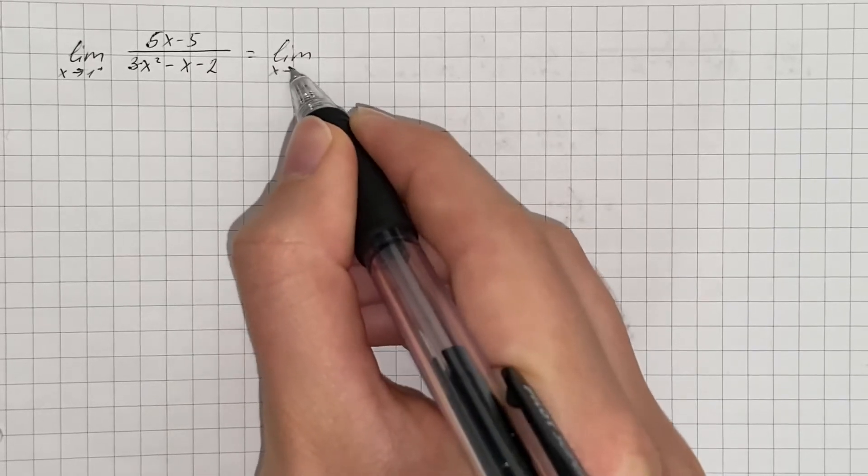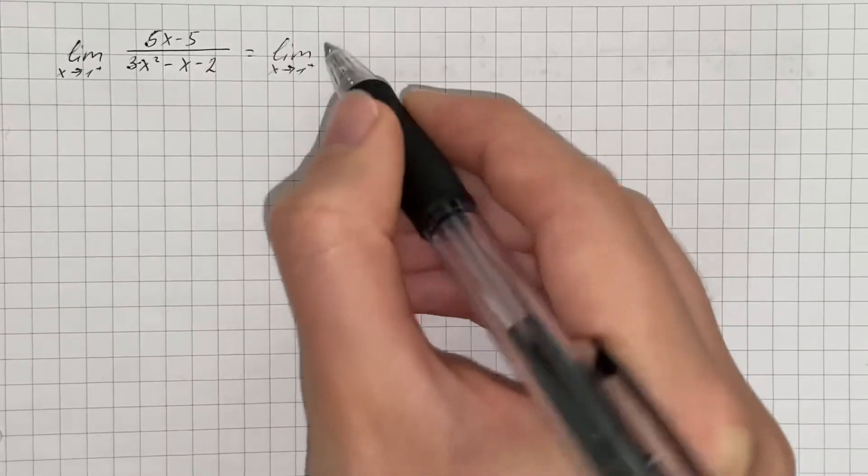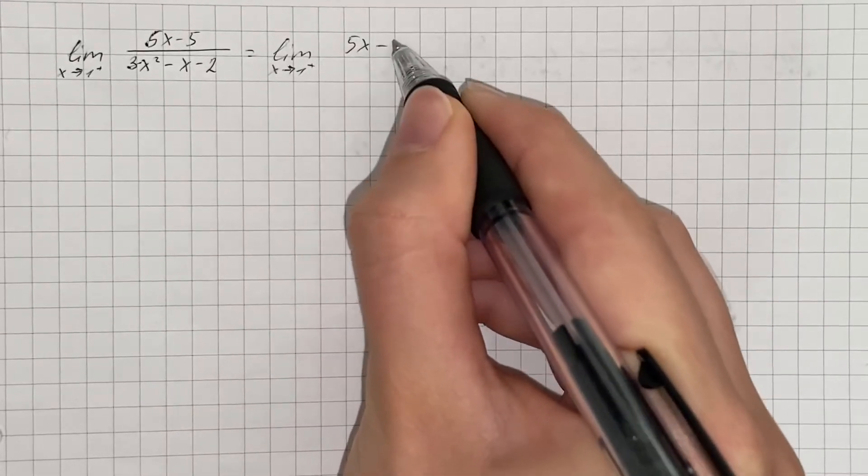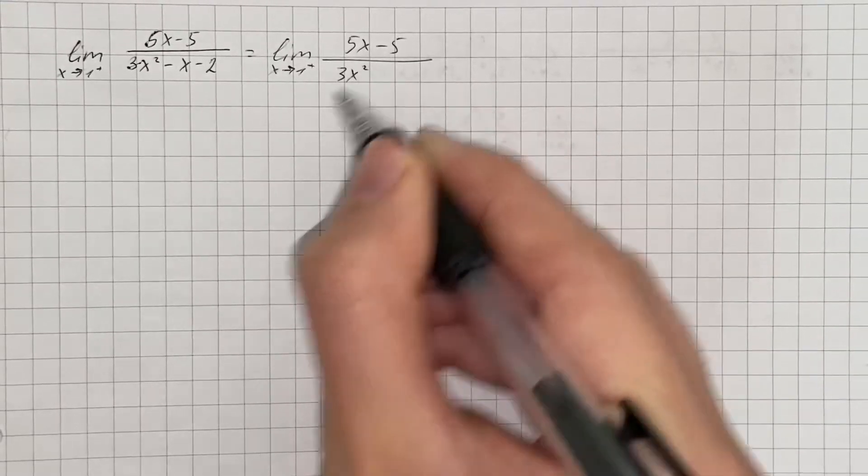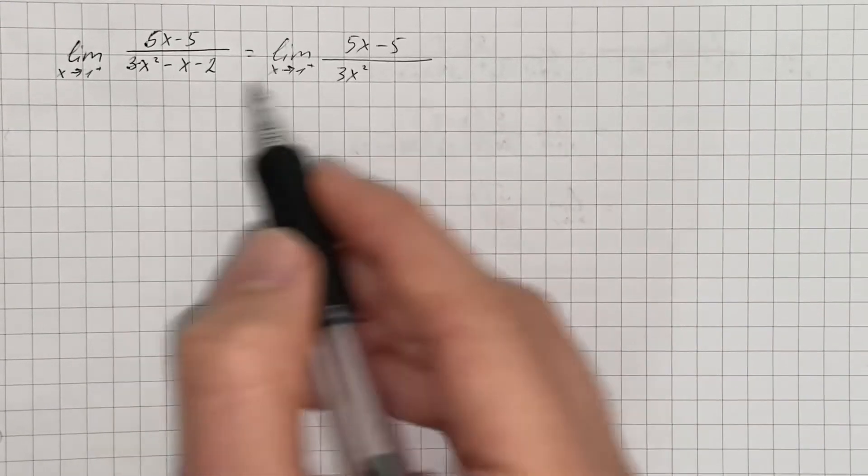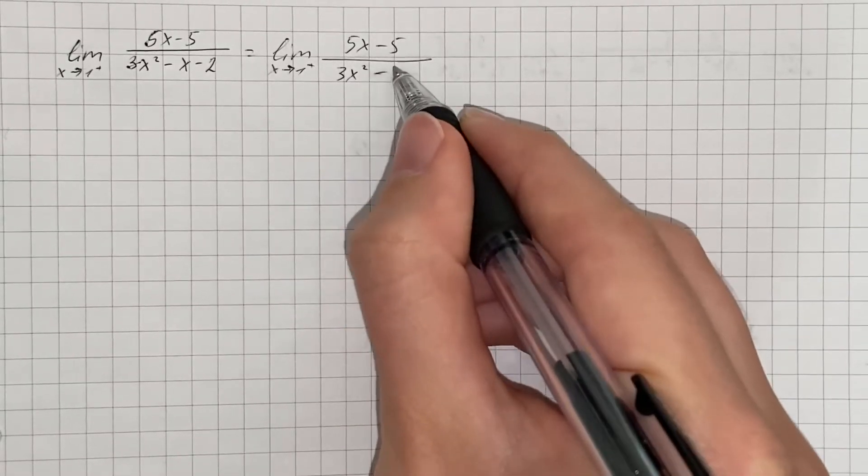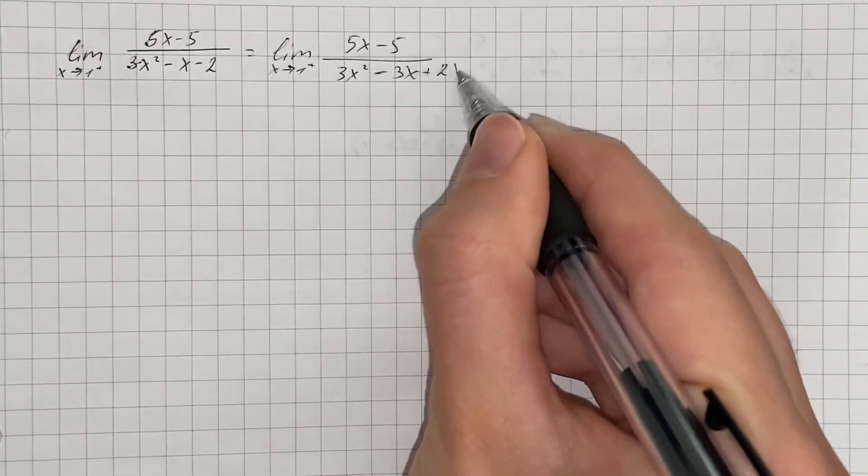The limit as x approaches 1 from the right side, 5x minus 5 over 3x squared minus x plus 2. And we're going to rewrite negative x as sum of negative 3x and 2x.